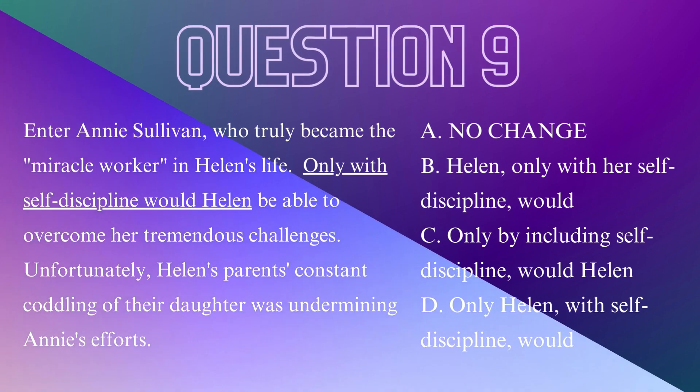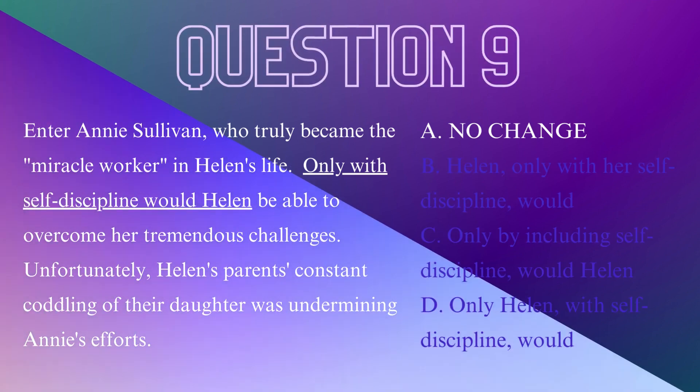Question 9. 'Only with self-discipline would Helen be able to overcome her tremendous challenges.' That sounds clear. The simplest, easiest way to write this is A, no change.